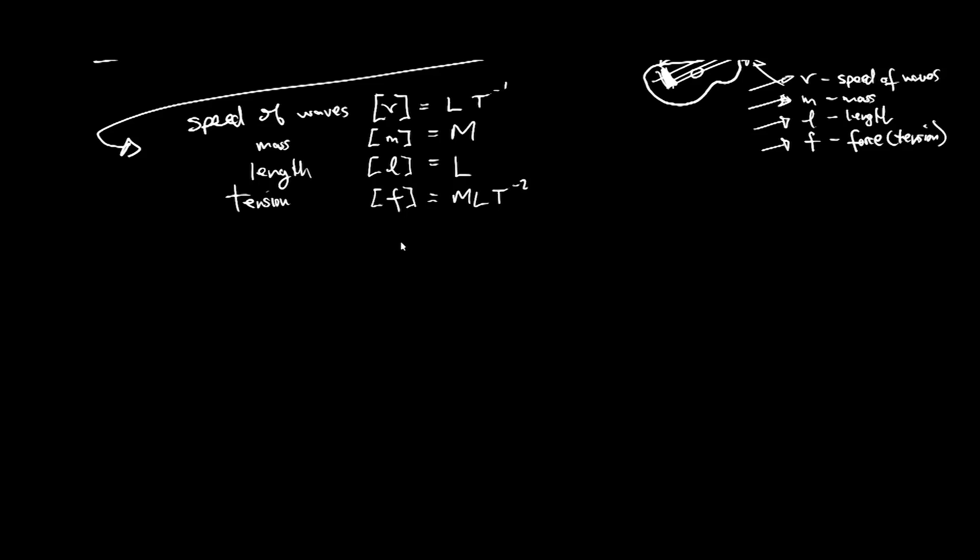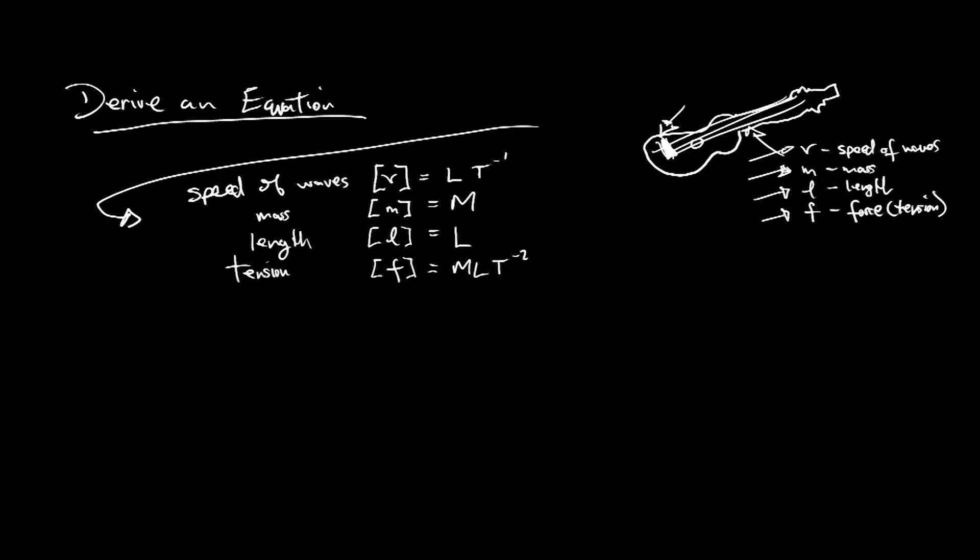And now what we'd like to do is say, we would like to generate or derive an equation. To derive an equation for the speed of the waves. So this thing here, we want to derive an equation that says V equals blah, blah, blah, in terms of M L and F. We haven't got a clue how this equation is going to be. In terms of its format, whether it's got squares or square roots or cubes. We don't know. But we're just about to find out what such an equation may look like. And this is the power of dimensional analysis.